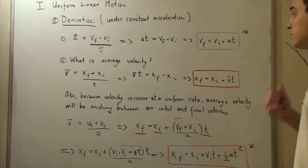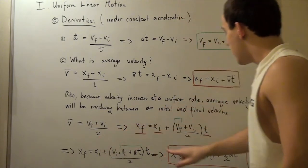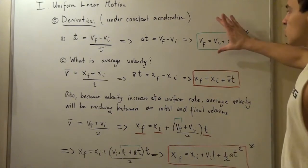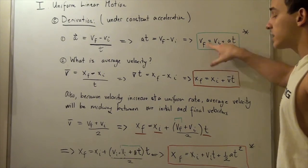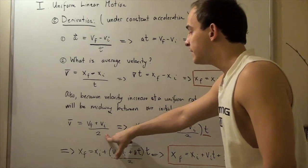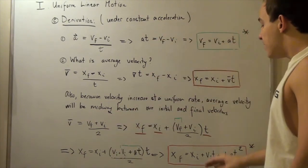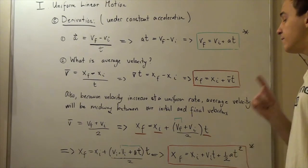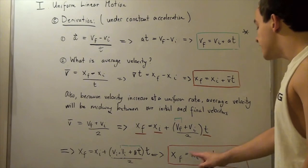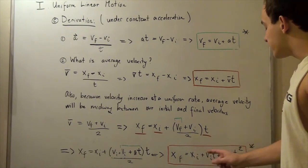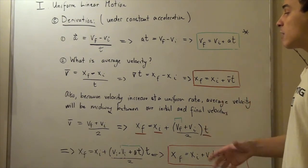So far we have derived three formulas. The first formula is useful for finding the final velocity of our object. The second formula is useful for finding average velocity under constant acceleration. The third formula is useful for finding the final position of our object, knowing initial position, initial velocity, time, and acceleration. Now let's derive our final fourth equation.